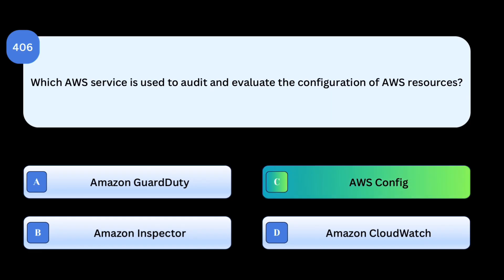Correct answer: AWS Config. AWS Config tracks resource configuration changes and evaluates them against compliance policies. Why others are incorrect: Amazon GuardDuty detects threats, not config auditing. Amazon Inspector identifies vulnerabilities, not config drift. Amazon CloudWatch monitors logs and metrics, not compliance.